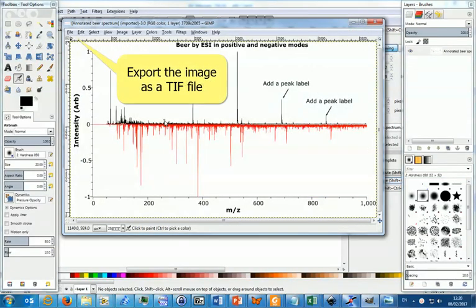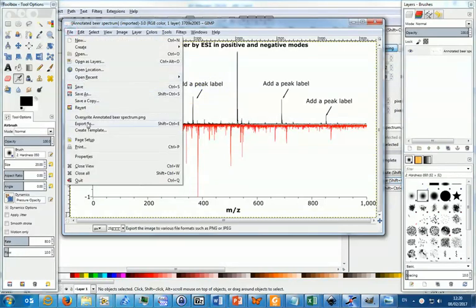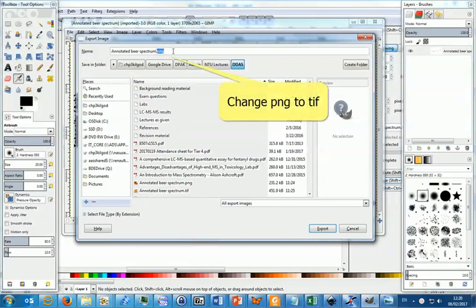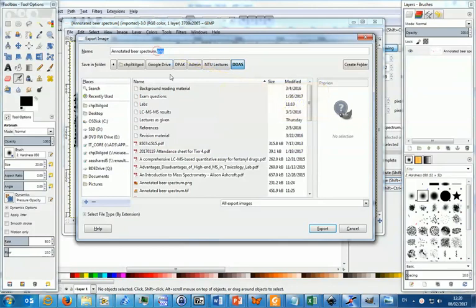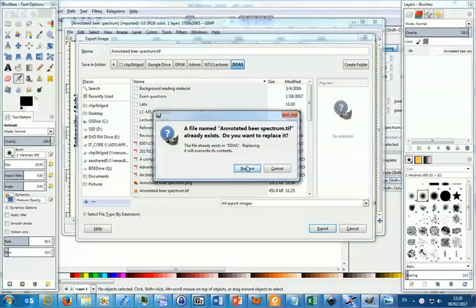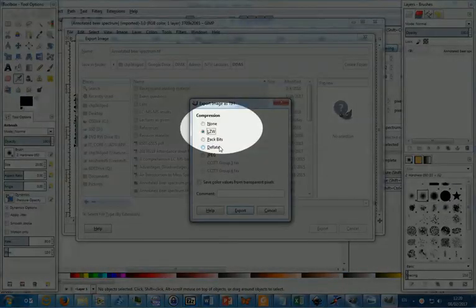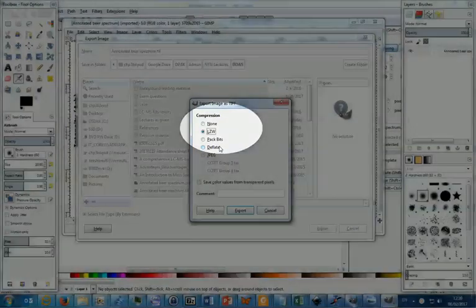To export the file as a TIFF image, go to the file menu and choose the export option. To export as a TIFF image, change the file extension from PNG to TIF.